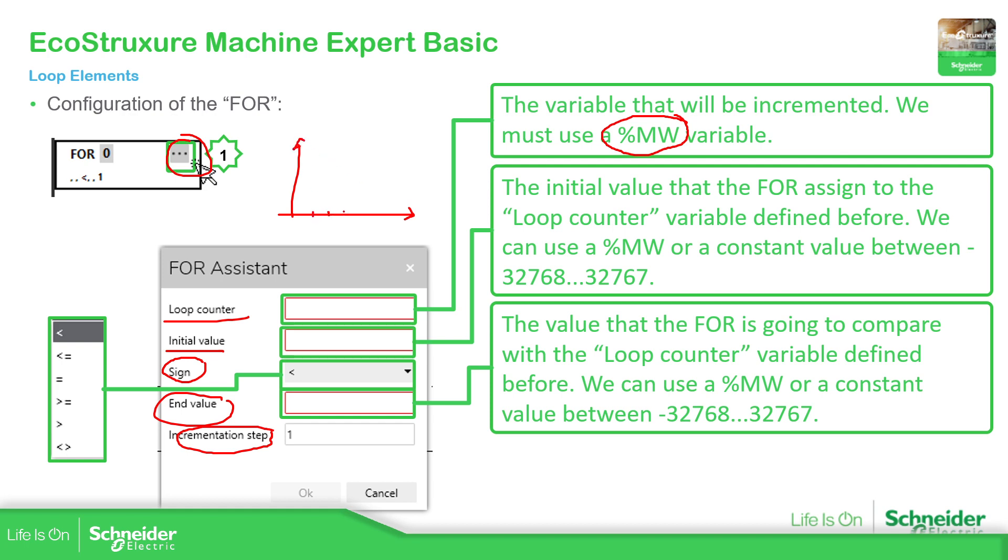This will be the increments, for example. So this one will be the value %MW. So I usually start in zero. So this will be my start for the initial value. And then I can specify the maximum value that we'll have. If the increment is by one, two, three, we can see that it's going to be like this until it reaches the value.